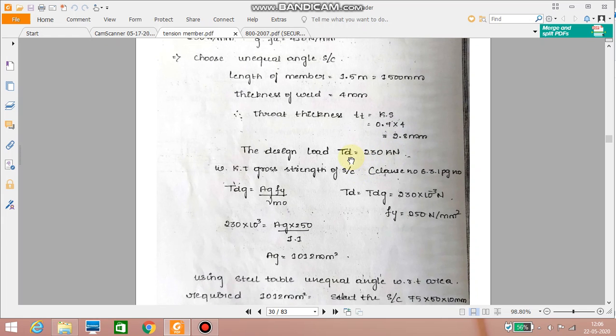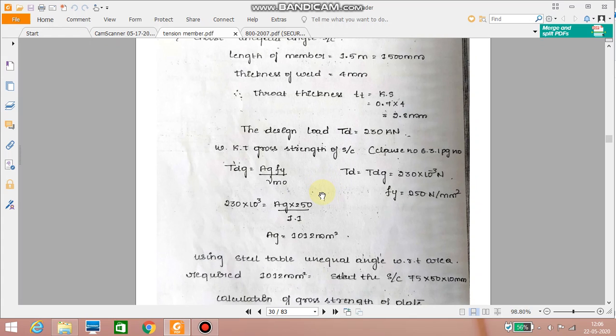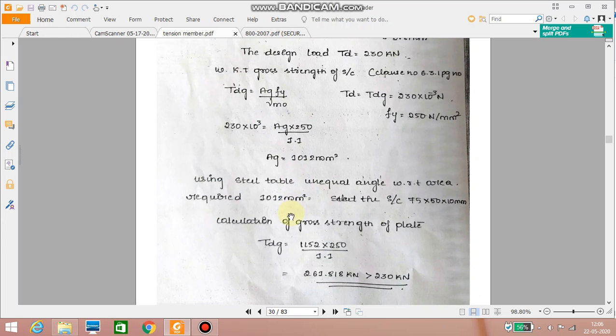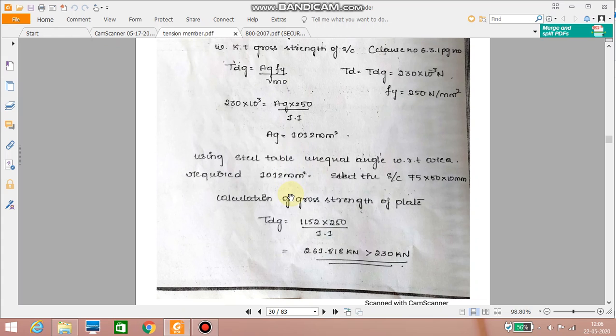Therefore design load is given in the problem 230 kilonewton. We know that the gross section strength from clause 6.3.1 is Tdg equal to Ag into Fy divided by gamma M0. So we can calculate the area from this. 230 is the load, 250 is Fy and gamma M0 is 1.1. We get 1012 millimeter square as the Ag. So using steel table for unequal angle with respect to the area near to this.